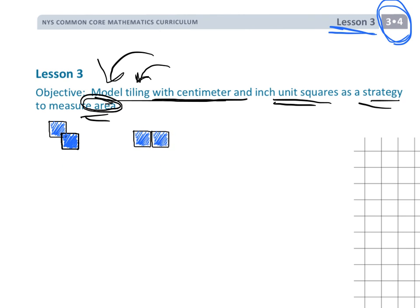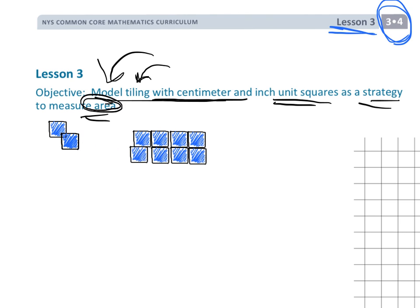Now let's take this square unit and put it right here, then take another one and another one and another one. The idea is I'm going to try, without any overlapping or any gaps, to make a rectangle. There we go — there's my rectangle, and you can see I used 12 square units altogether because there are 12 of them there.